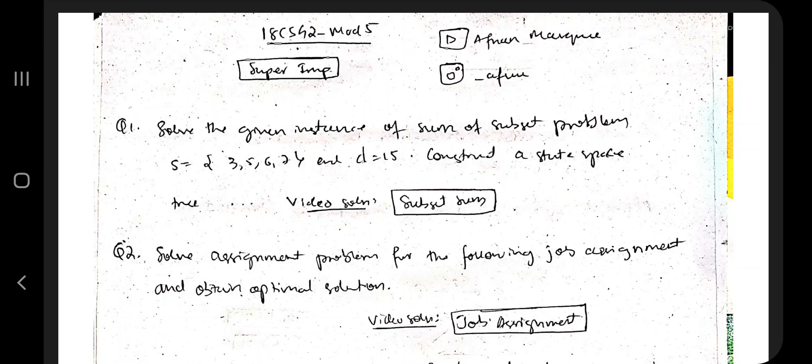Hello everyone, today in this video we will be discussing Module 5 of 18CS42, the super important questions. There are four main topics: backtracking, branch and bound, 0-1 knapsack, and the definitions of P, NP, NP-hard, and NP-complete classes.